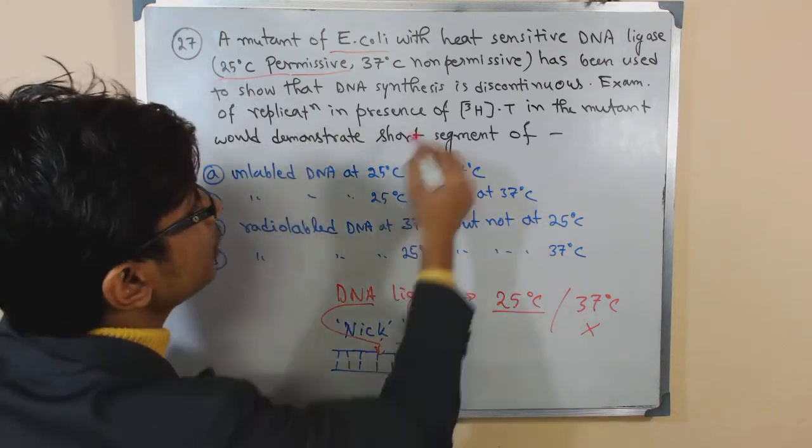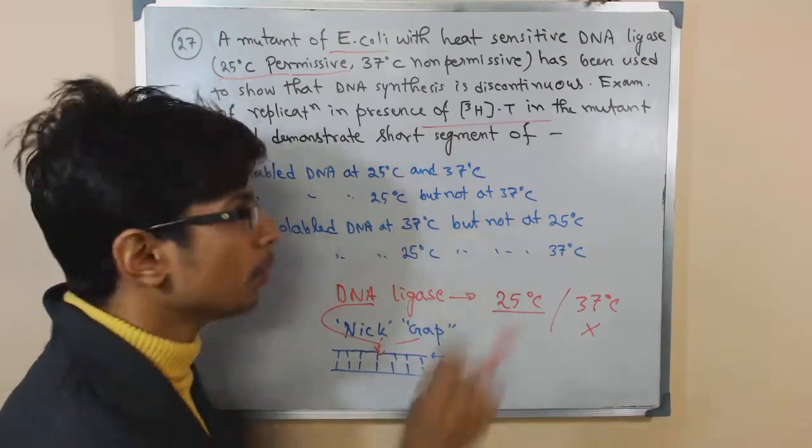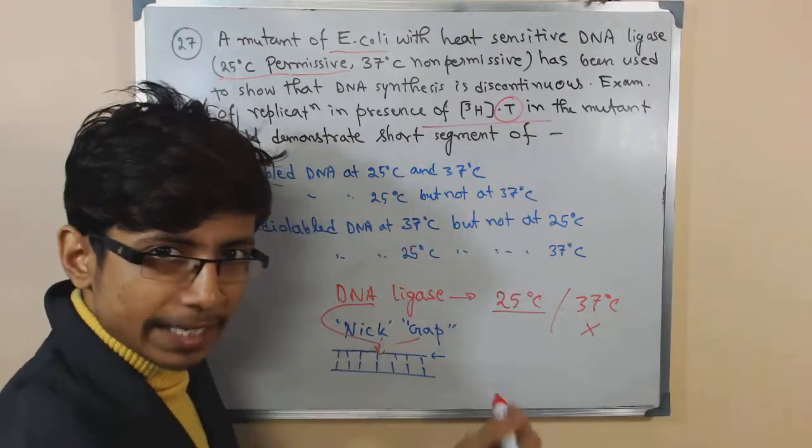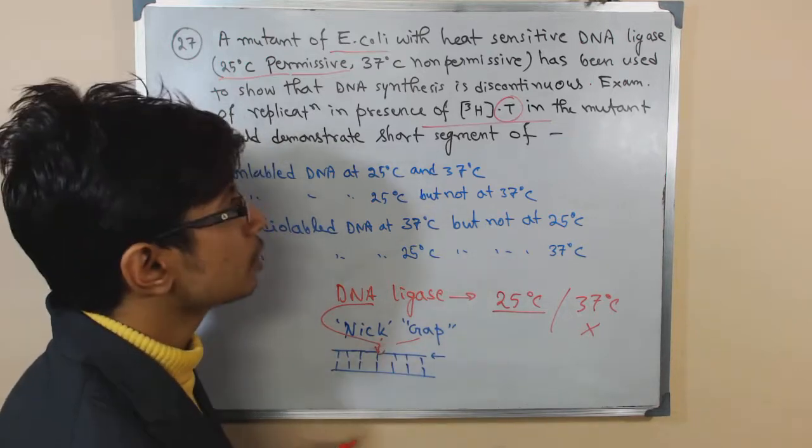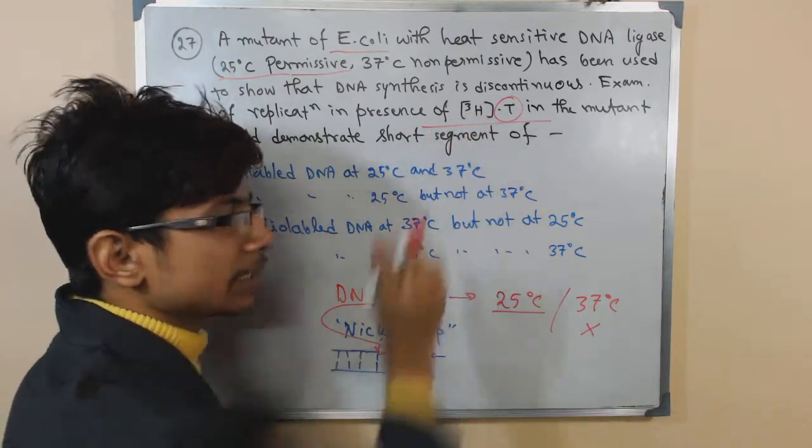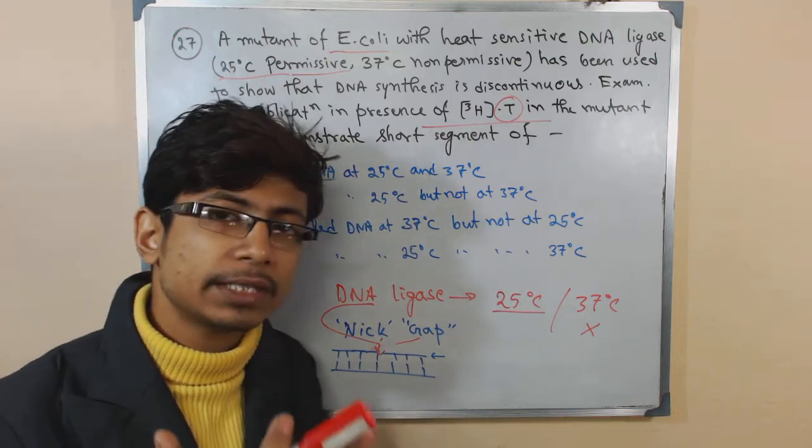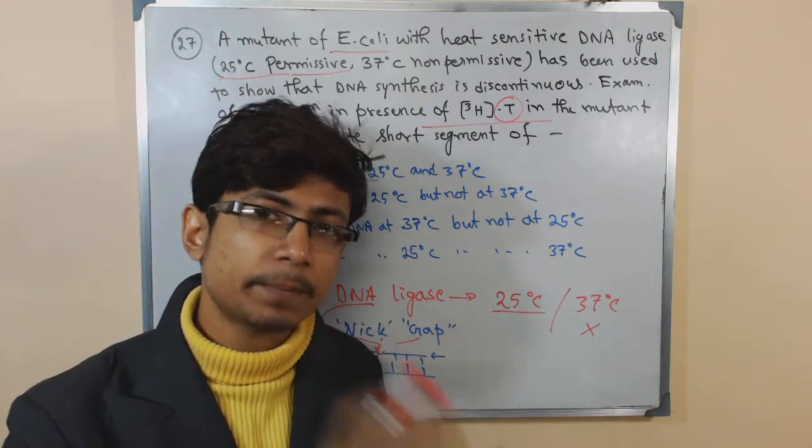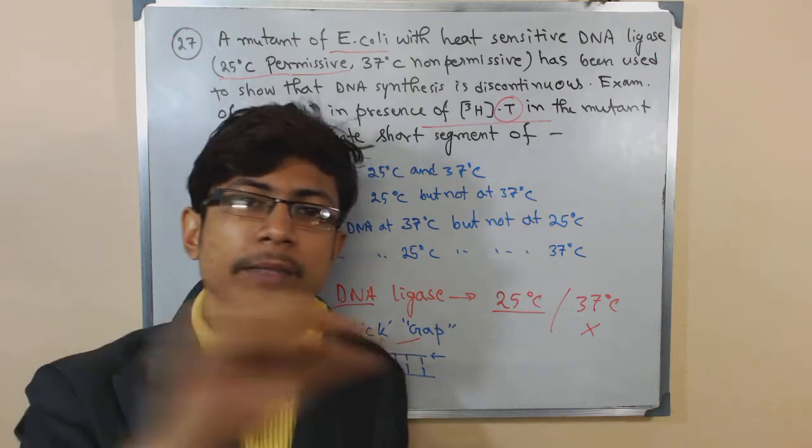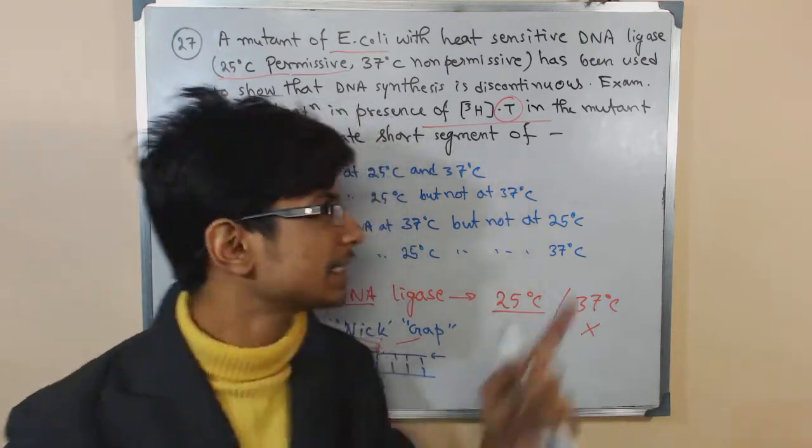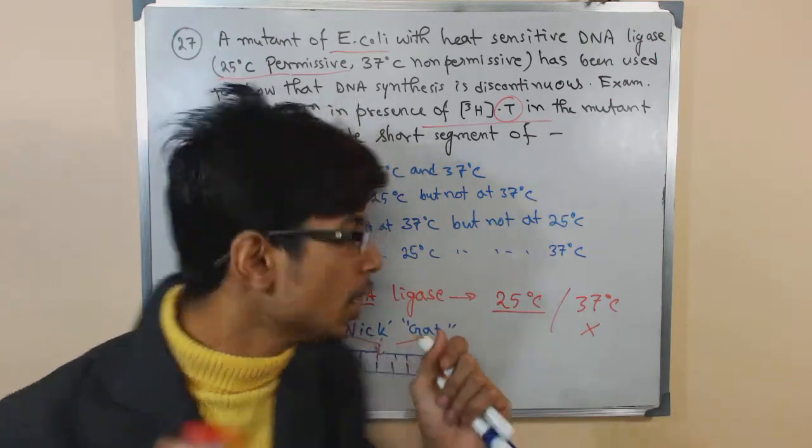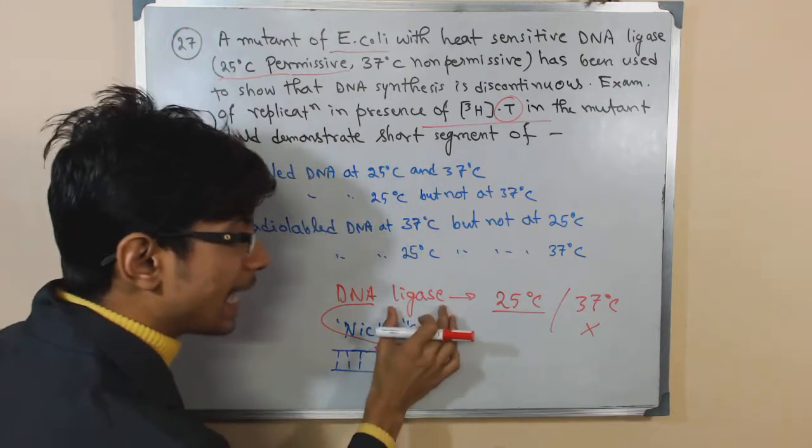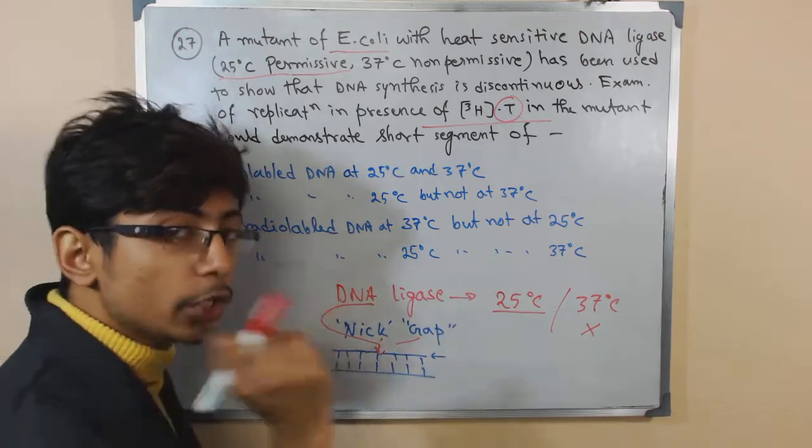So if we use a radiolabeled thymine in the position, they can take any of the bases, they took here thymine for example. Bases will be added with the growing chain. So in this case, what we know is that by using the radiolabel, after plating that and seeing the plate, we can find where we can see bands and bands will be discontinuous. It will tell us that the DNA which is produced is discontinuous in nature. Here are four different statements. So what we know now, we know ligase will function at 25, will not function at 37.